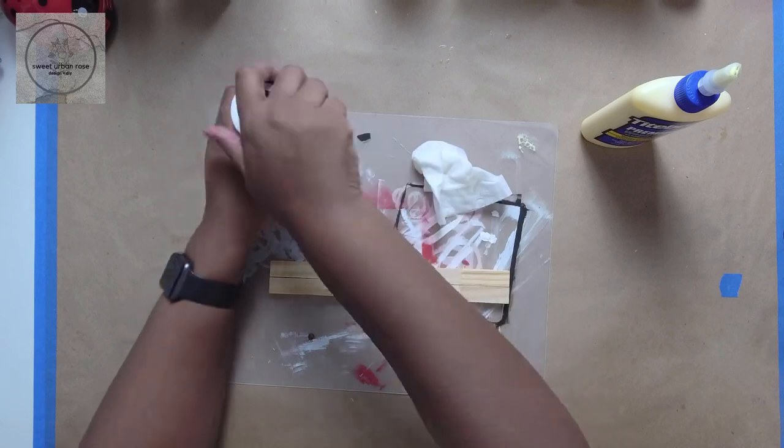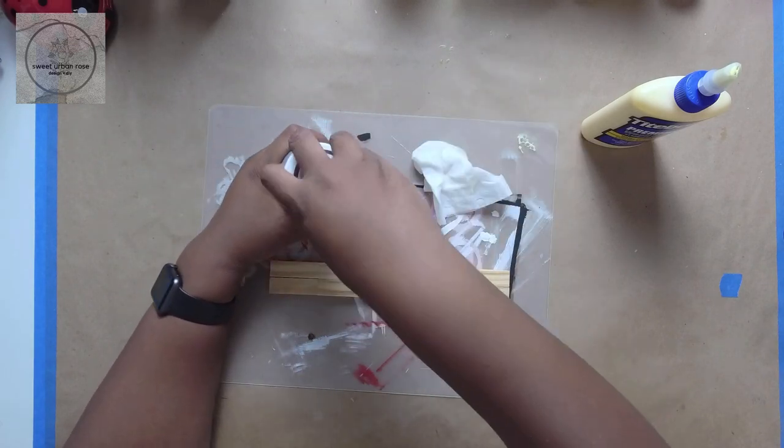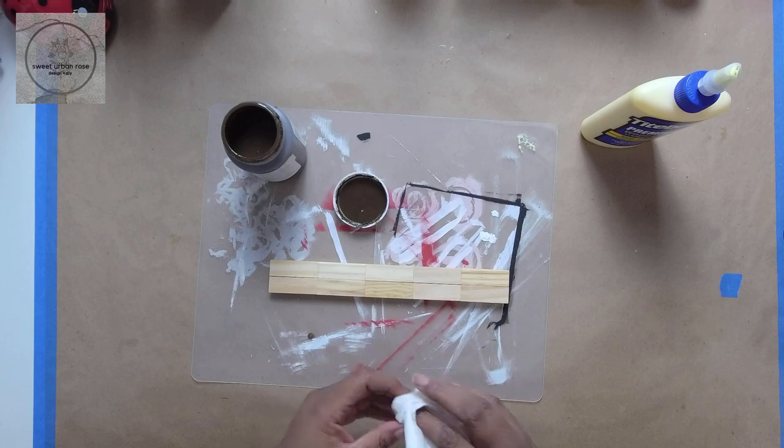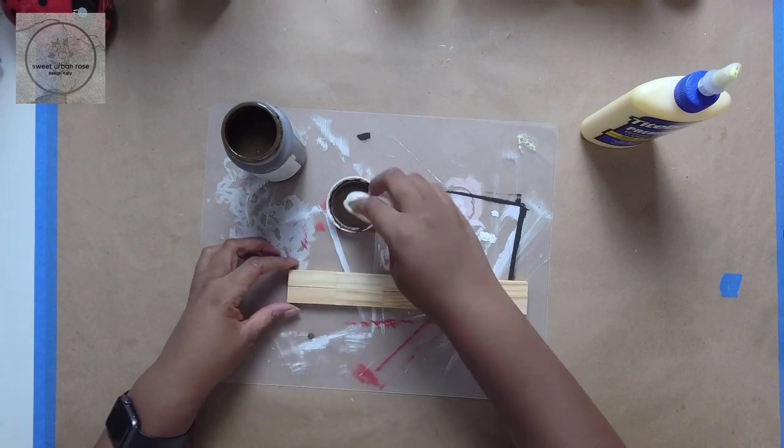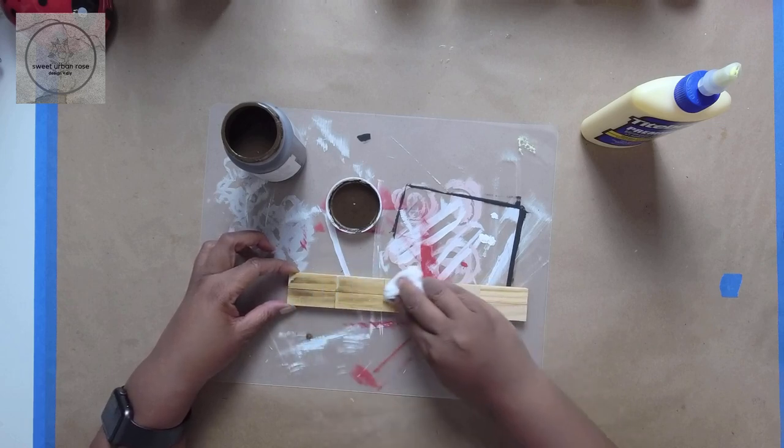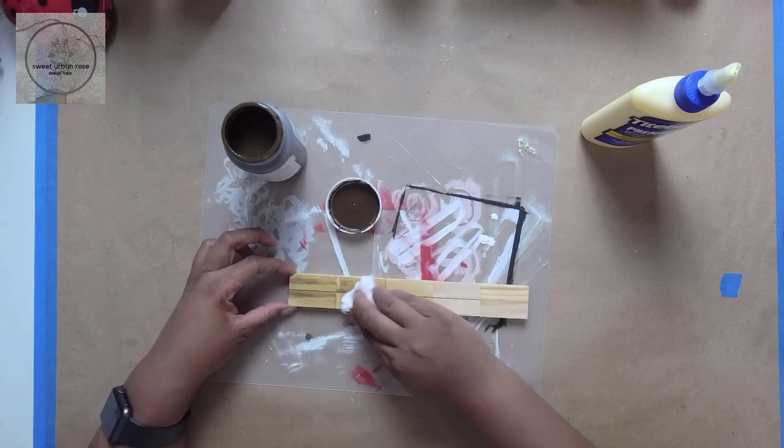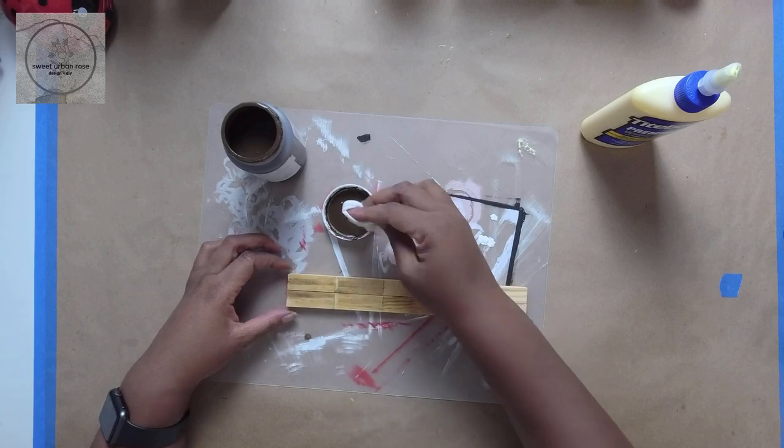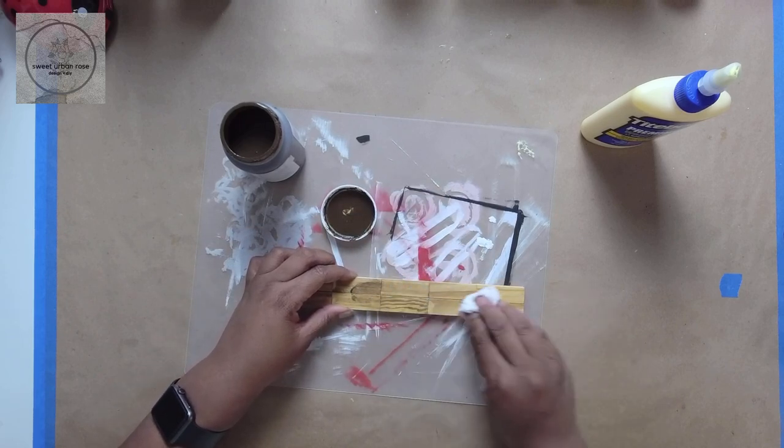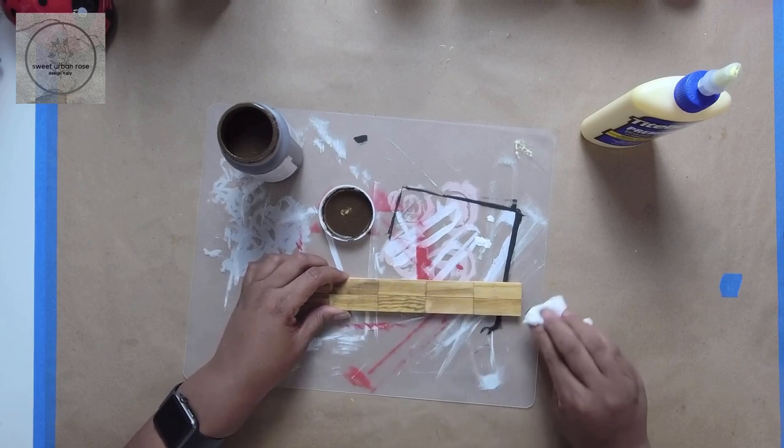So next what I'm gonna do is the same thing like how I did the frame, just take a wipe here and I'm gonna go along all sides of it. I just don't need to do the bottom because we're not going to see the bottom. I'm gonna go ahead and do these and then set them aside to dry.